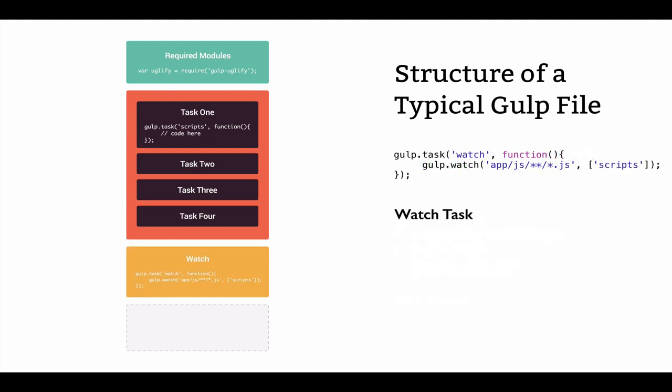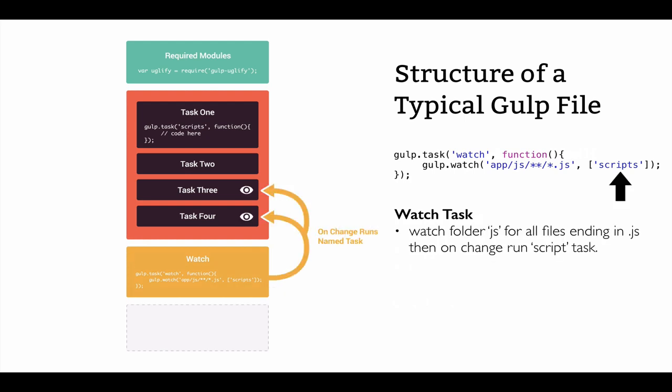The next two tasks are optional but you'll pretty much see them in every Gulp file you encounter. The first one is called the watch task. The purpose of the watch task is to watch certain files and folders for changes, and when those changes occur, run a named task. So in this case we're watching two different paths, and as they change they run the named tasks we specify inside our watch function.